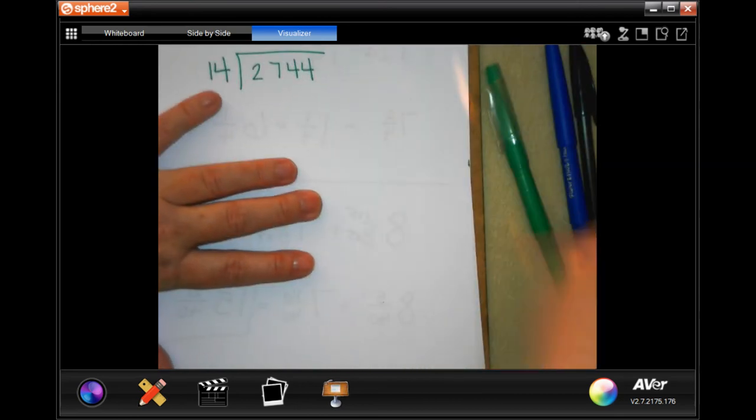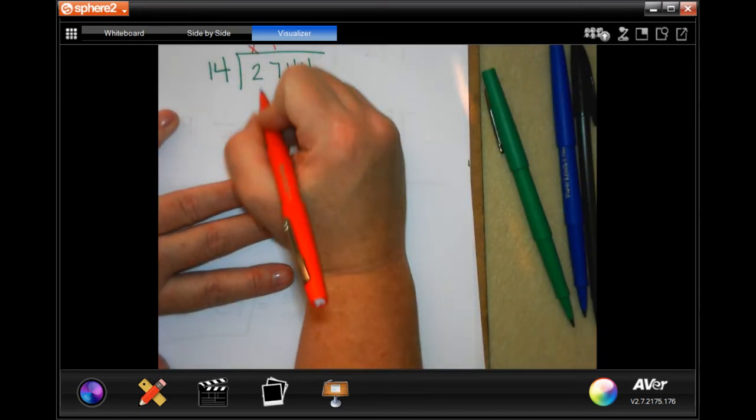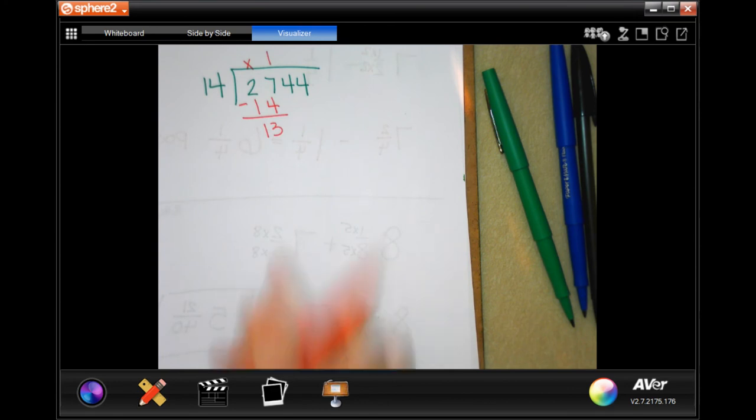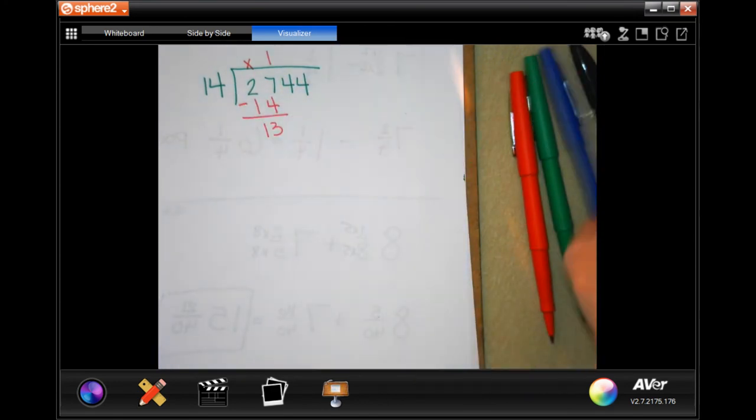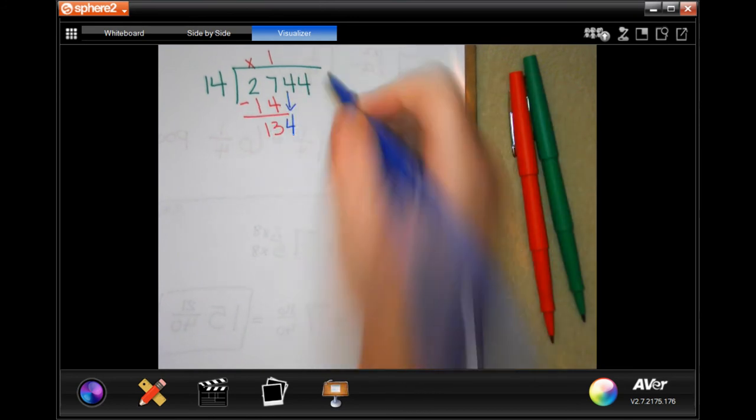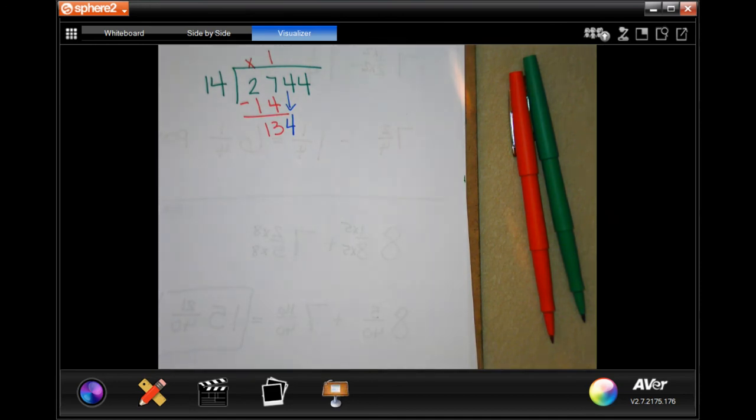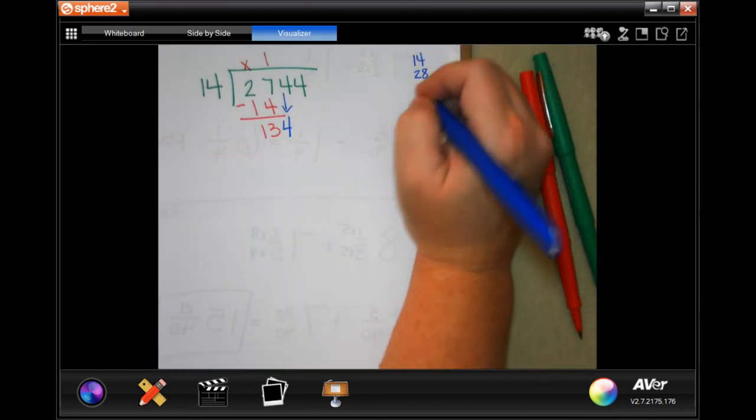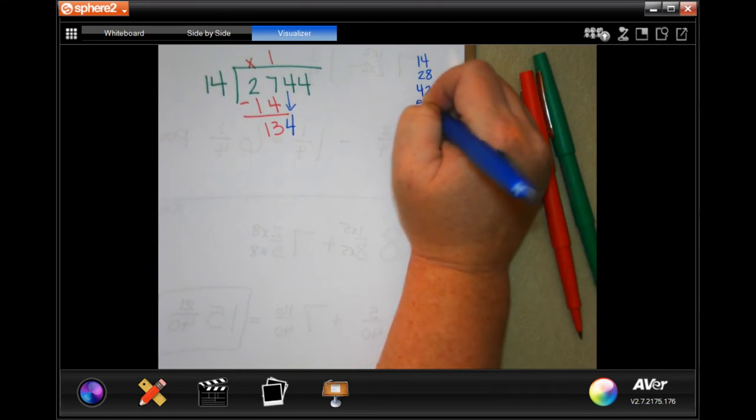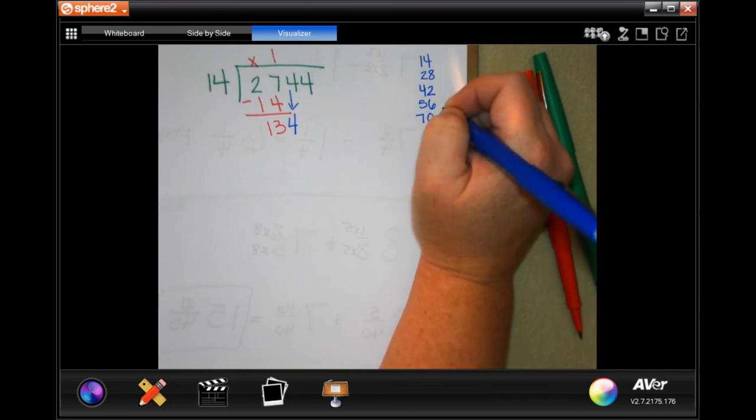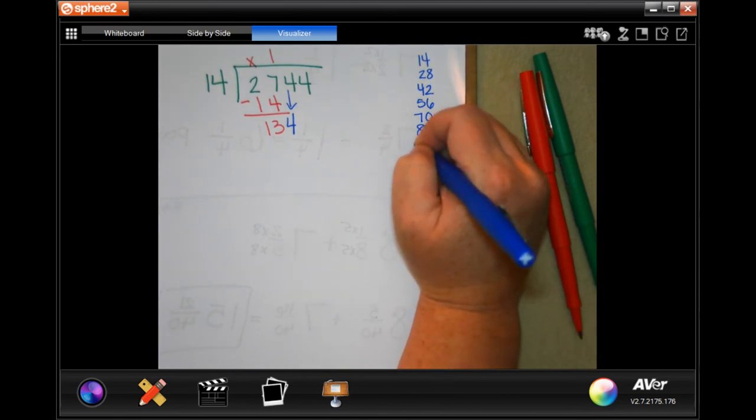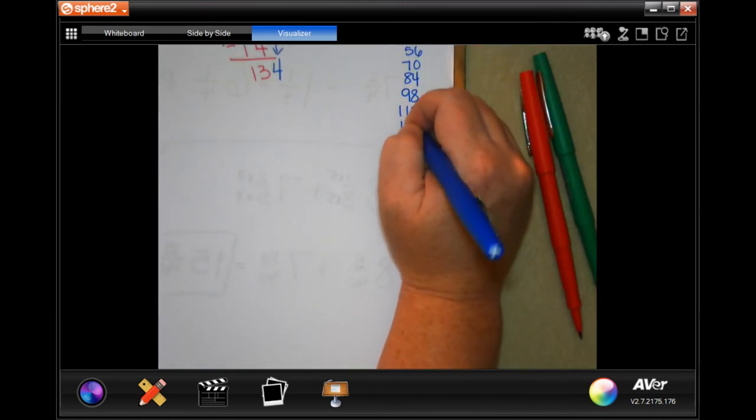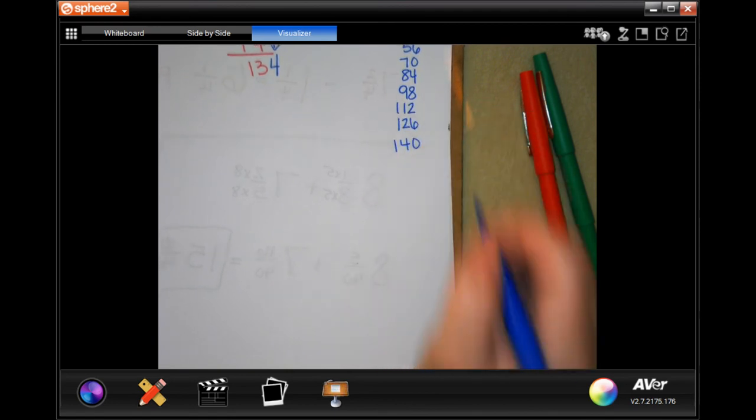And do the 2,744 people in 14 days to find out how many people visited each day. So 14 is not going to go into 2. It will go into 27 one time. That is 14. When I subtract, I'm going to get 13. Now I don't know my multiples of 14 to get from 14 to 134. So I'm just going to write down my multiples of 14. So 14, 28, 42, 56, 70, 84, 98, 112, 126, 140. And hopefully, I don't have to go past that.